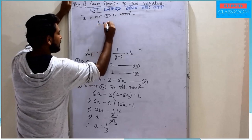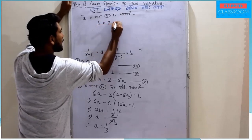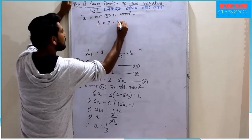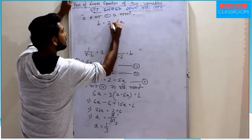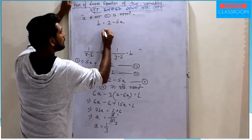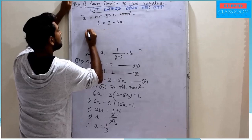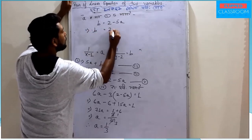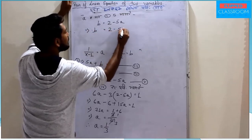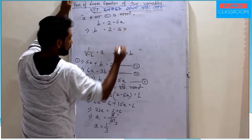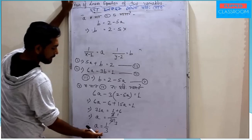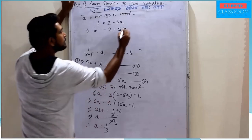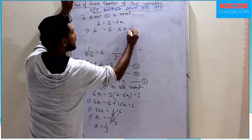So b equals 2 minus 5a. Substituting, b equals 2 minus 5 into a, which gives b equals 2 minus 5 times (1 by 3), so b equals 1 by 3.